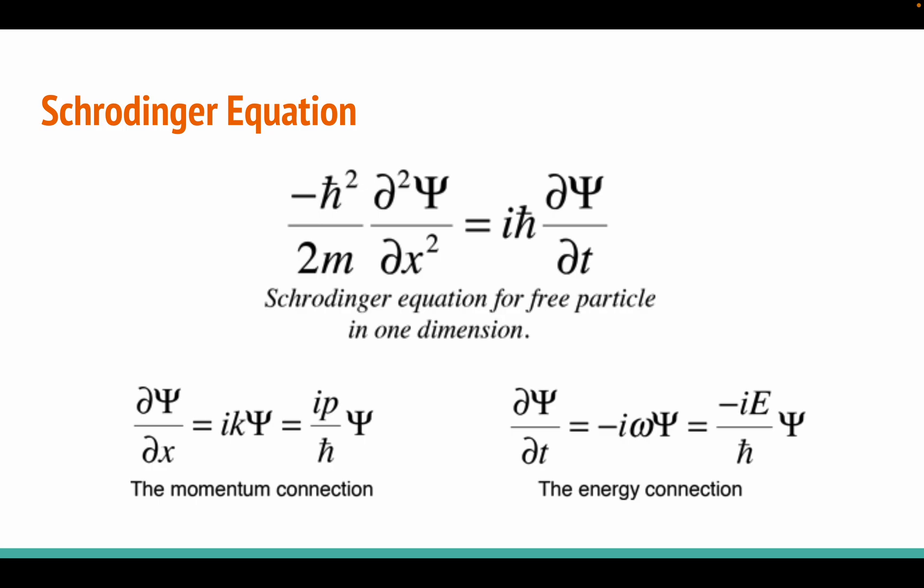The probability distribution of the quantum walker evolves over time according to this Schrödinger equation, which describes how the wave function changes in response to the Hamiltonian of the system. In our case, the Hamiltonian takes into account the connection between the nodes and the network and determines the probability of the walker transitioning from one node to another.